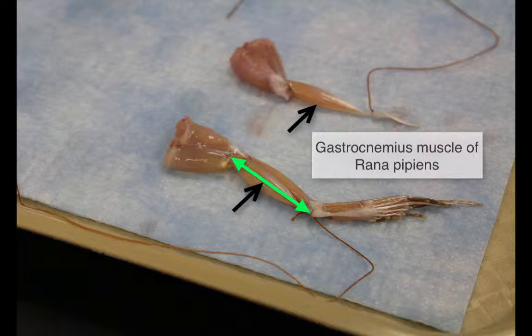This is the preparation of the gastrocnemius muscle. The green arrow shows the in vivo resting length measurement, and the thread is tied to the Achilles tendon.